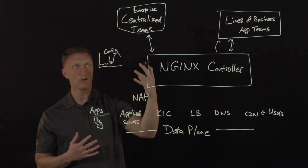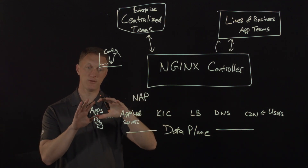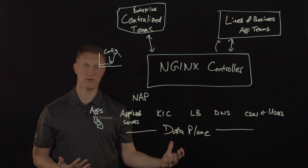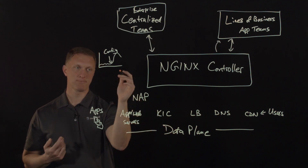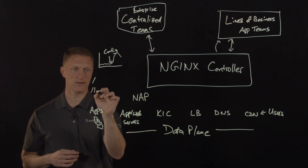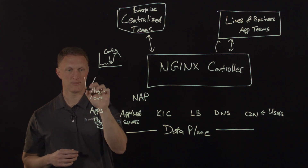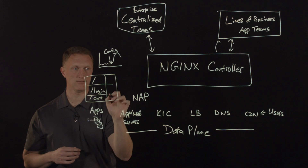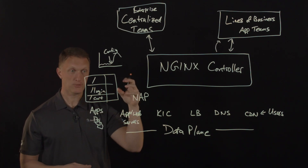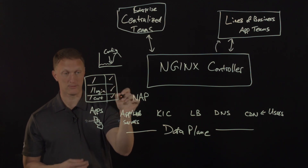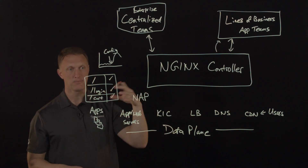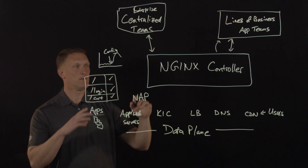Along with the insights and feedback loop, we also introduce audit capabilities for security teams. Security teams will have a view across the enterprise to know which components of an application have protection turned on. For example, in a table showing a homepage, login page, and shopping cart, the security team can see which components have application protection enabled and where it still needs to be applied.